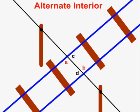Alternate interior angles can be illustrated with a situation like this one. We have a pair of train tracks in blue, which represent a pair of parallel lines. We know that train tracks are always parallel. And we have a wire in black, which crosses the train tracks. The wire represents a transversal — the name for a line that crosses a pair of other lines.